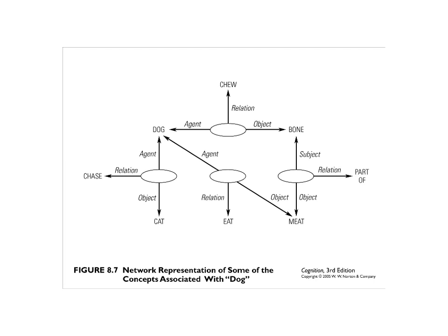The same concept — meat — is connected to bones and dogs in two different ways. You can imagine this expanding further: other things are chewed, other things are eaten, meat is connected to lots of other things, cats are connected to lots of other things. Each concept, whether cat, dog, bone, or meat, can be connected to other things by the nature of that relationship. That's a propositional network, and it seems to be a really good way to describe how we store a lot of our semantic knowledge.